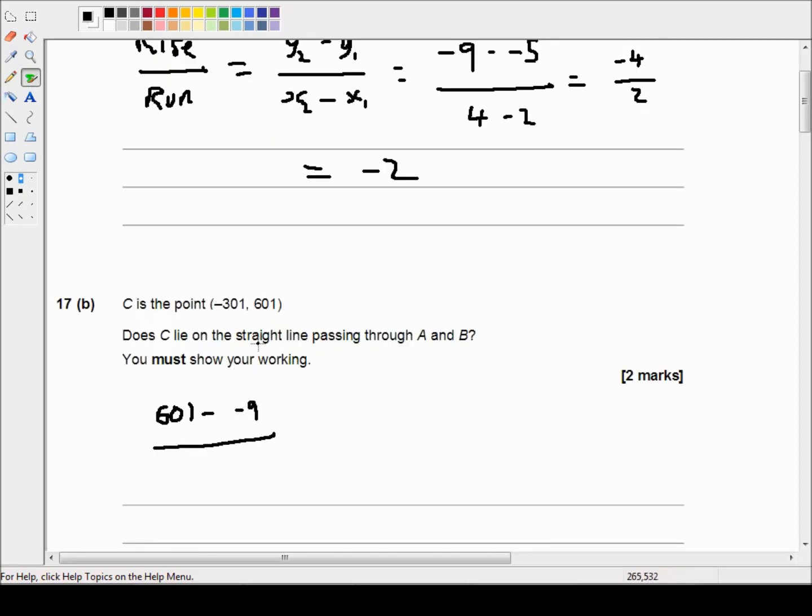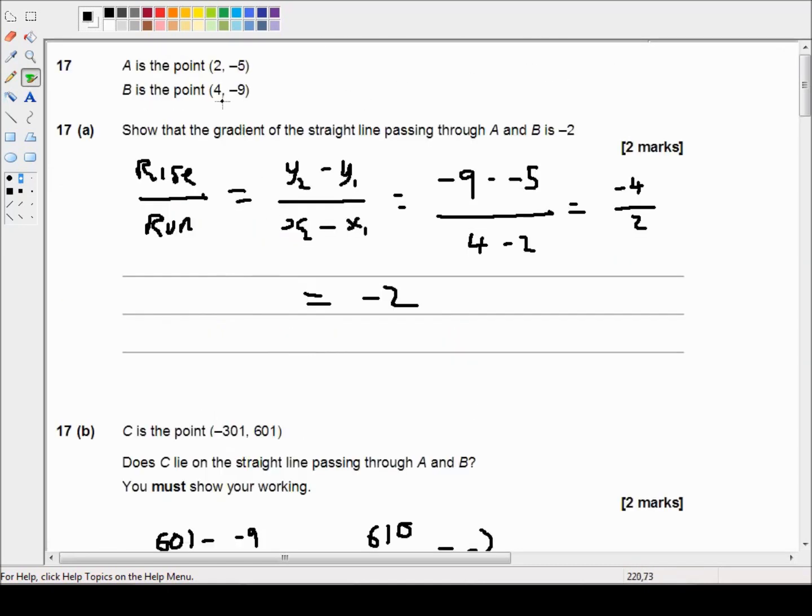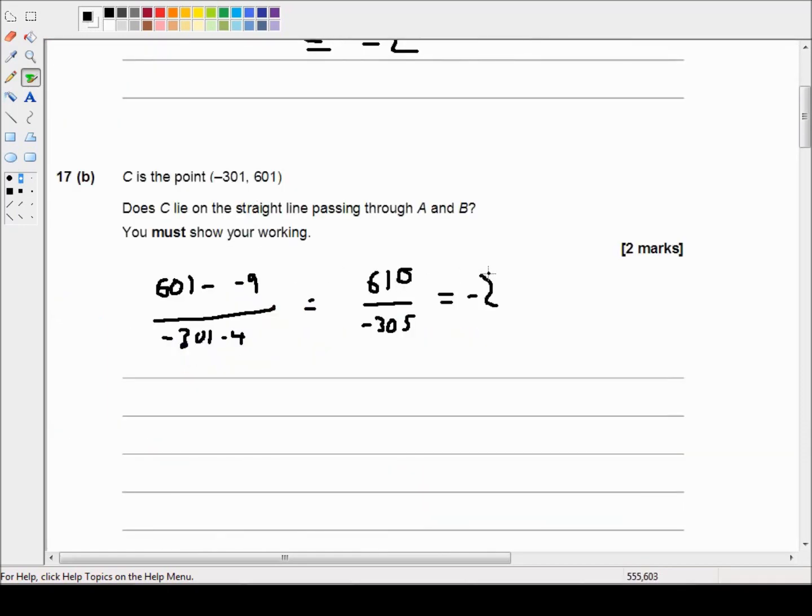So if we did 601 minus -9 over -301 minus 4, that equals 610 over -305, which equals -2. So the gradient is the same and one of the points is on the same line, so it must be the same line.